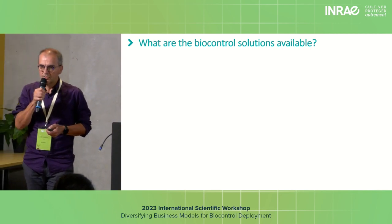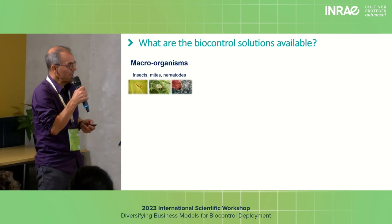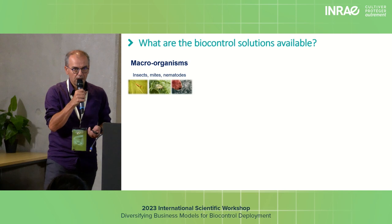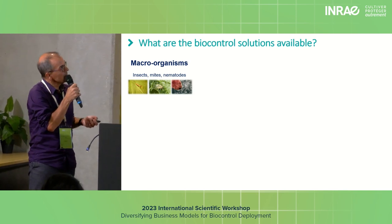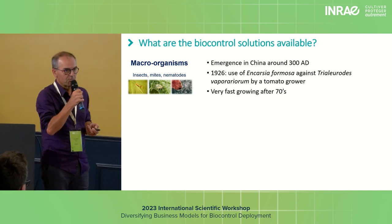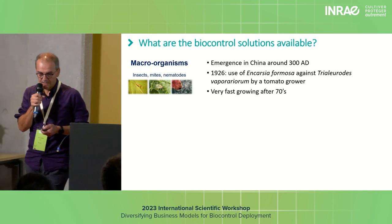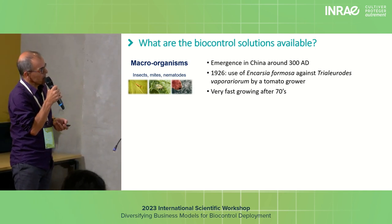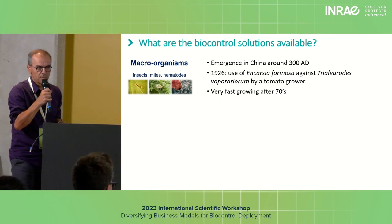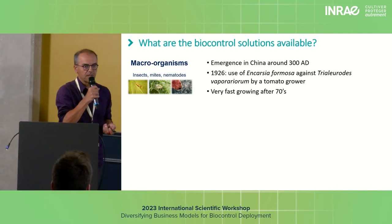What are the biocontrol solutions available at present? Macro-organisms like insects, mites, and entomopathogenic nematodes are some of these solutions. These micro-organisms emerged a long time ago, probably in China, around 300 years before Christ. An important milestone took place in 1926, when tomato growers used the parasitic insect Encarsia formosa against Trialeurodes vaporariorum. After that, there was very fast growth of these techniques after the 1970s.